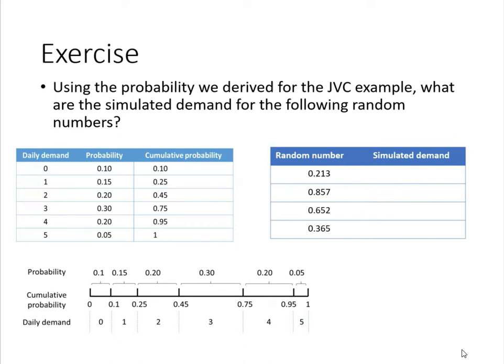Now, let's have an exercise. Let's use the probabilities that we just derived for the JVC example to find out the simulated demand for several random numbers.